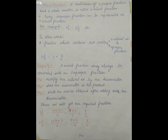First property: a mixed fraction may always be converted into an improper fraction. Follow these steps — Step one: multiply the natural number by the denominator. Step two: add the numerator to the product. Step three: write the new number obtained after adding over the denominator. For example, three and one by two gives two multiplied by three equals six, then six plus one equals seven, so we get seven by two. For one and three by four: four multiplied by one plus three over the denominator four gives seven by four.